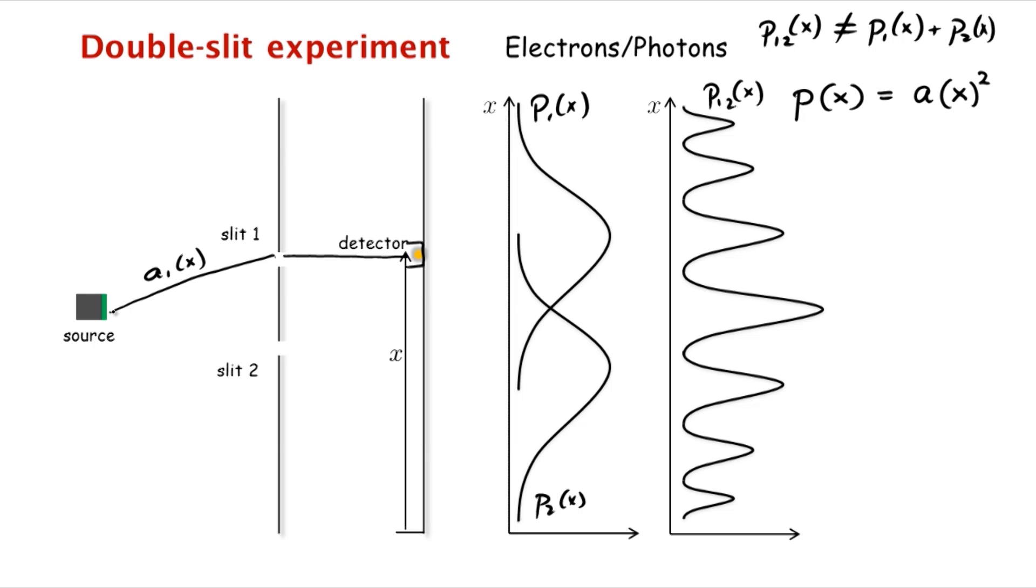And similarly, there's a probability amplitude a2 of x that the photon went through, sorry, the electron went through slit two and ended up at x. Again, a2 of x is either positive or negative. When we try to detect the electron, the probability that we detected there is the square of the total amplitude of the electron being at x, where the total amplitude is a12 of x, which is a1 of x plus a2 of x.